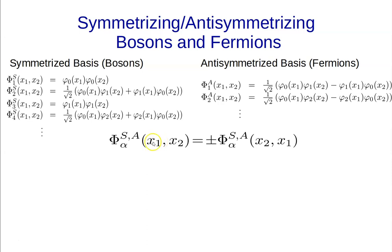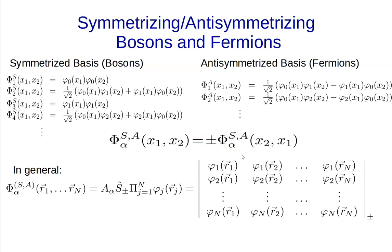If you have a symmetrized basis, exchanging the positions of two particles gives back the same state with a plus sign. For fermions, exchanging the positions of two particles gives minus the state. In general, we can write these n-particle basis functions in configuration space in terms of single-particle orbitals with a prefactor accounting for normalization — for two particles, one over square root of two — introducing an operator that symmetrizes or anti-symmetrizes a tensor product of single-particle states.